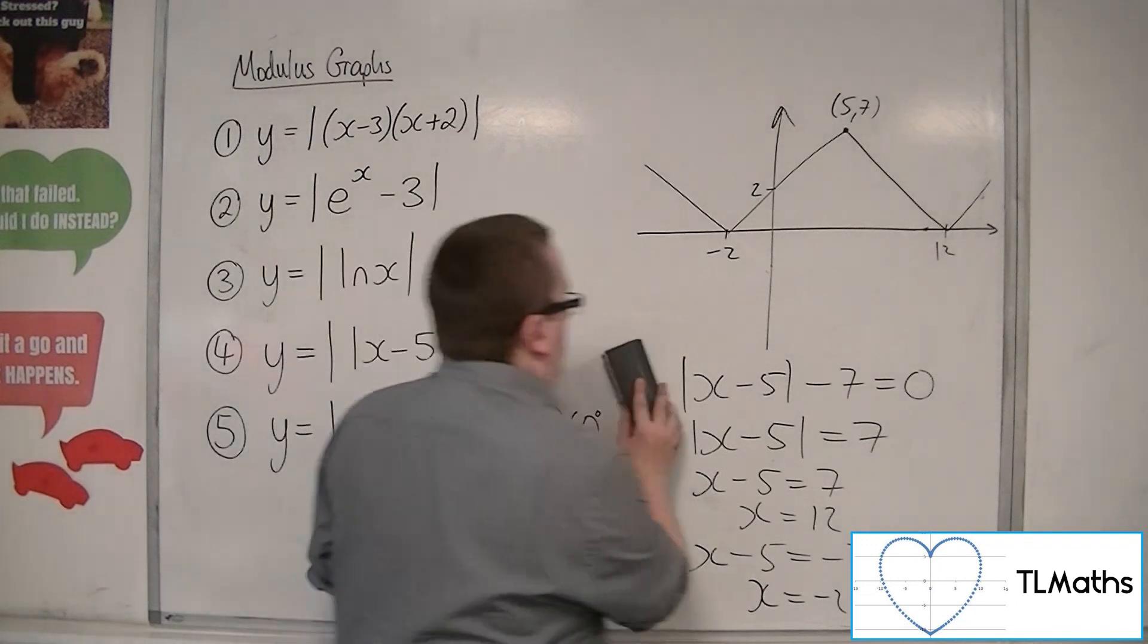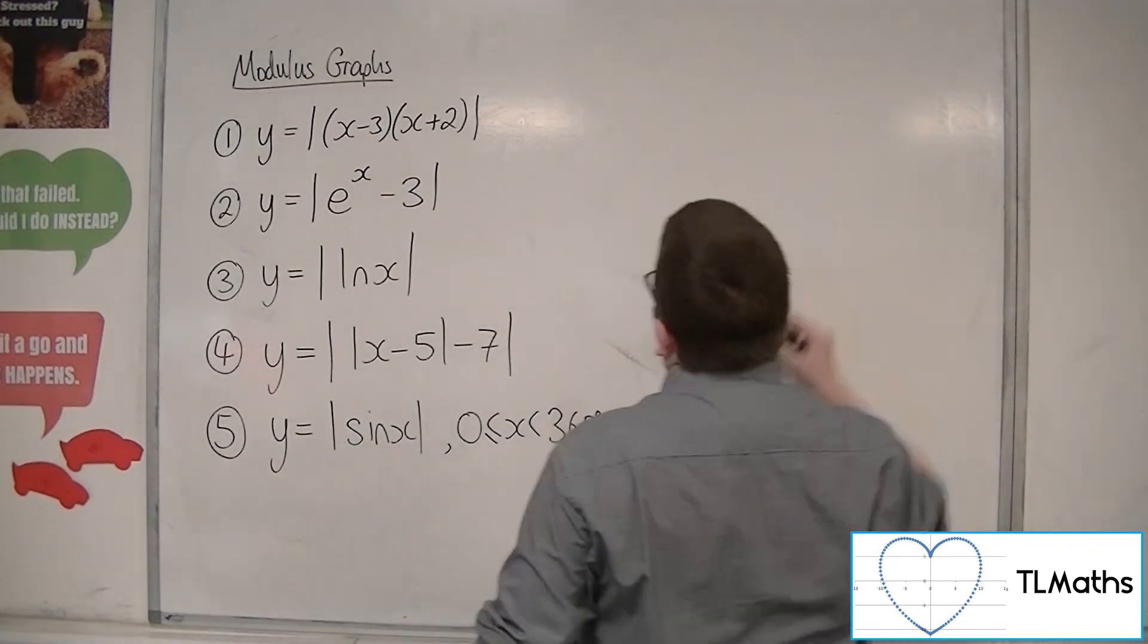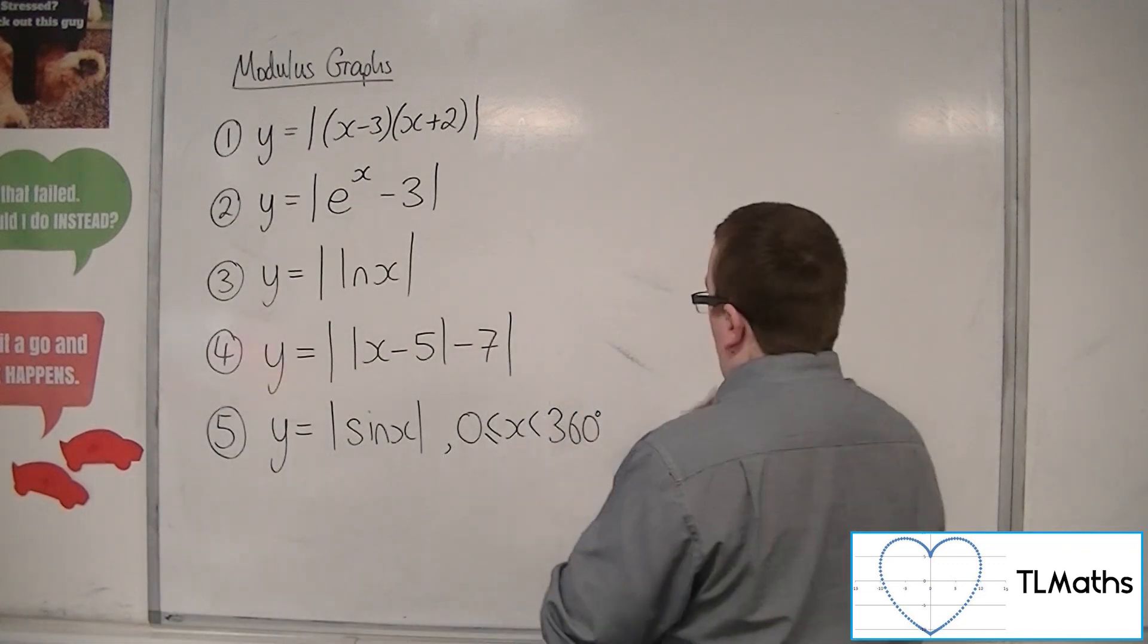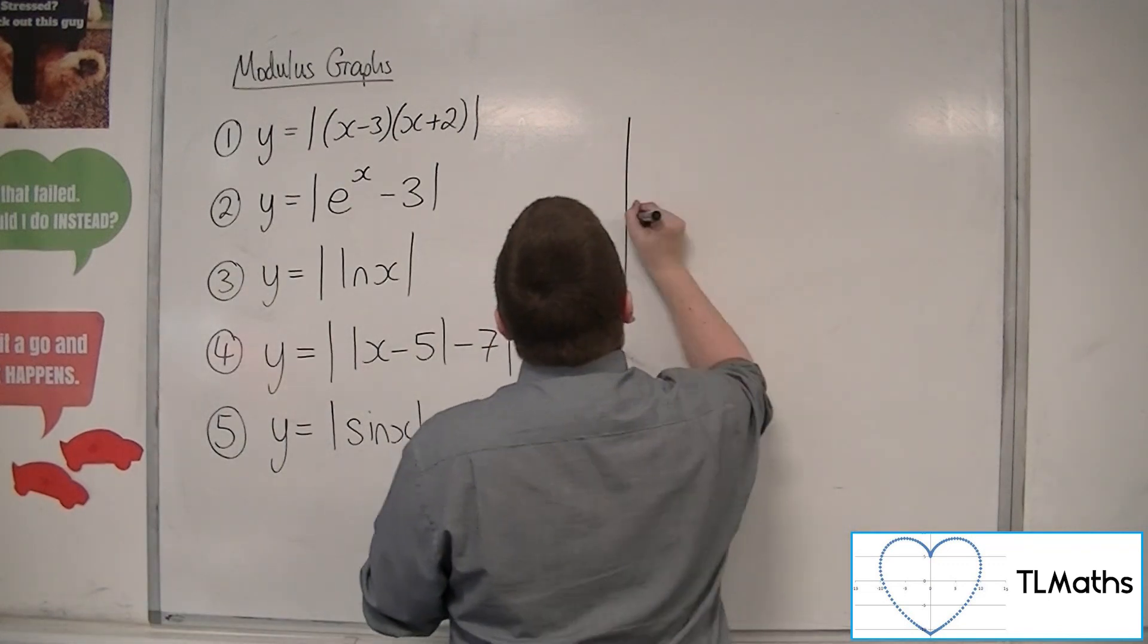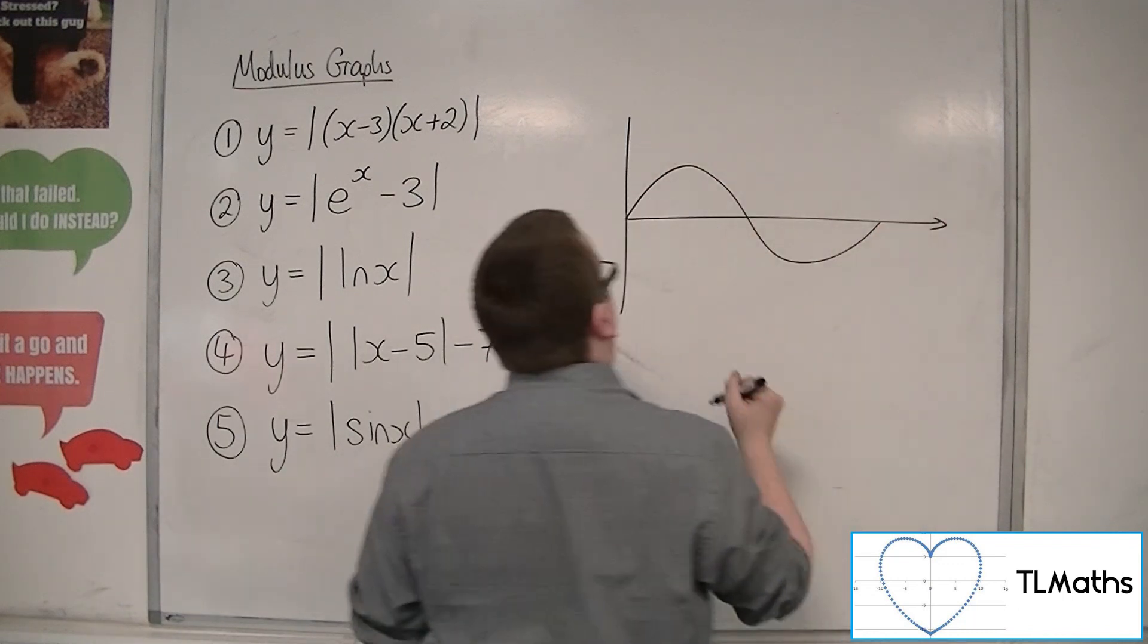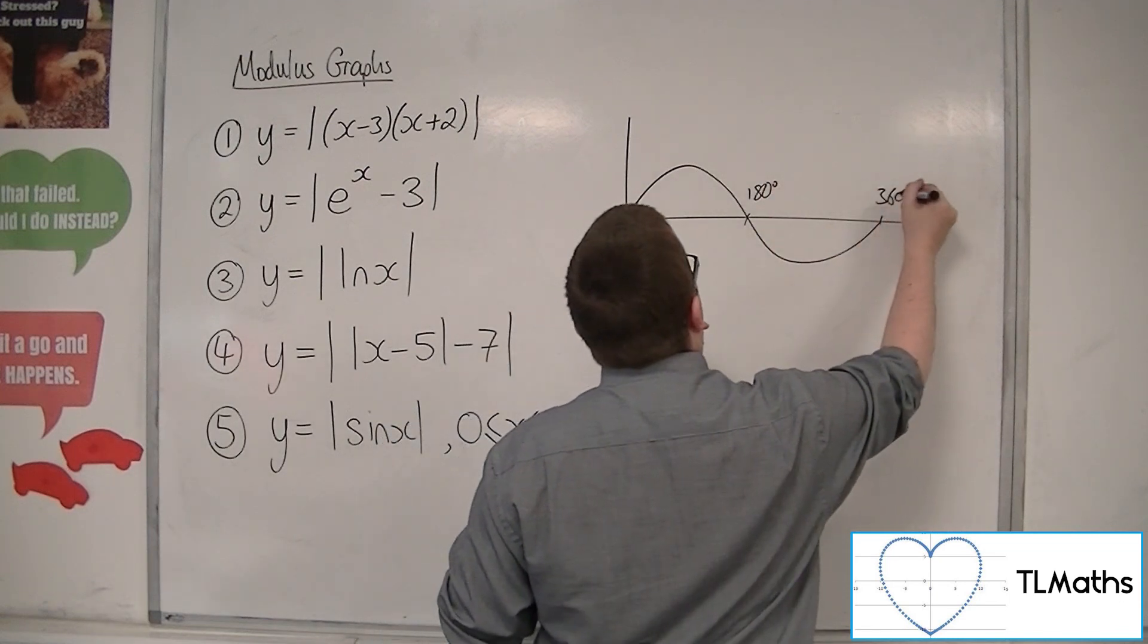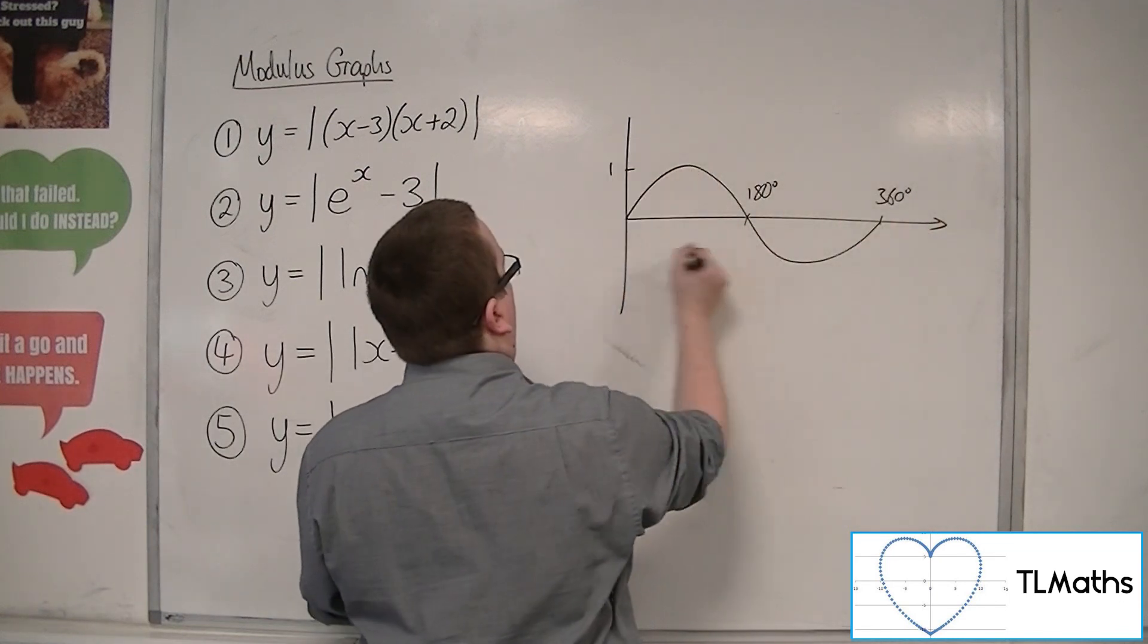And so the last one, we've got y equals the modulus of sine x between 0 and 360. Well, we know that sine would ordinarily look like this, where that's 180, that's 360, that's 1, that's minus 1.